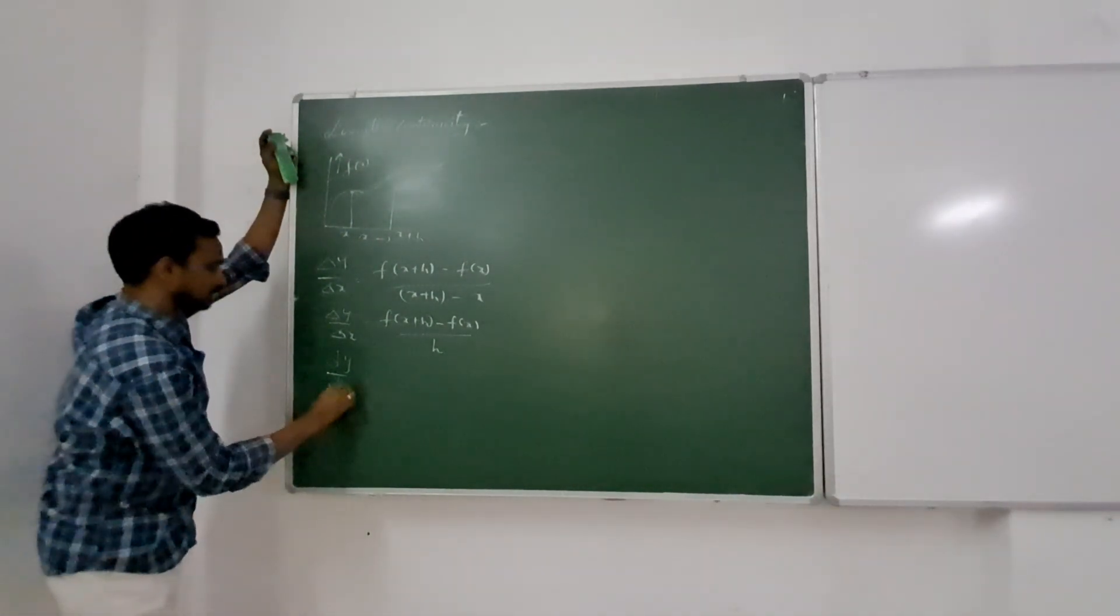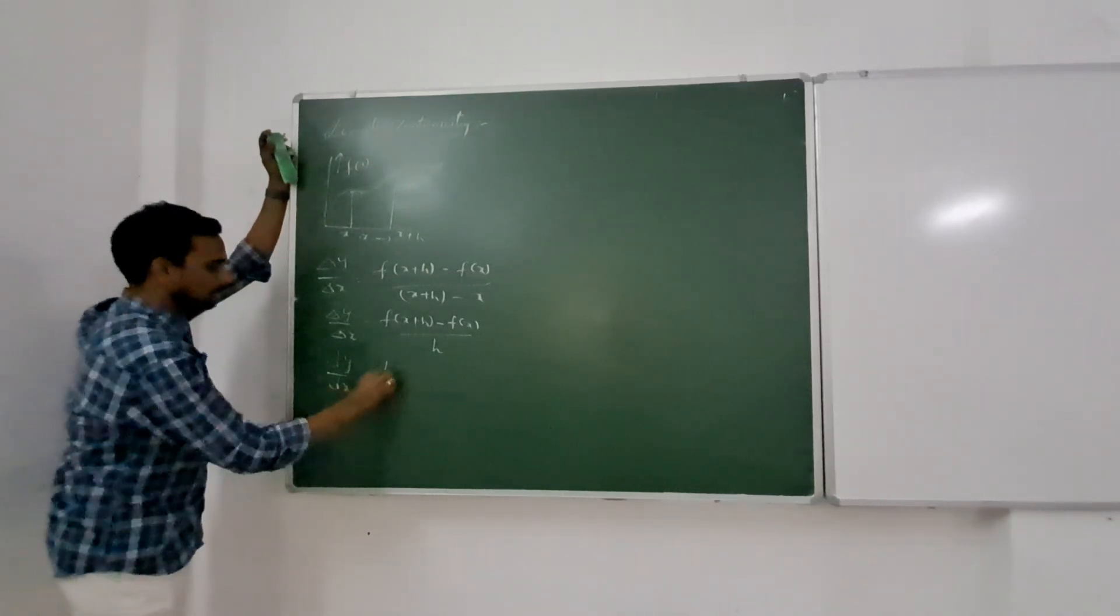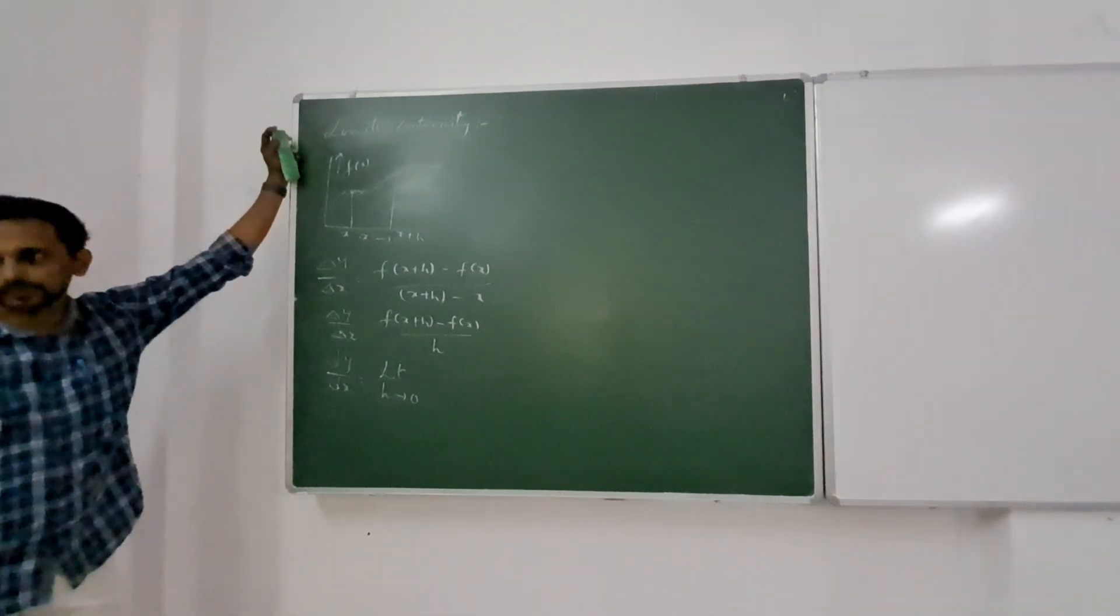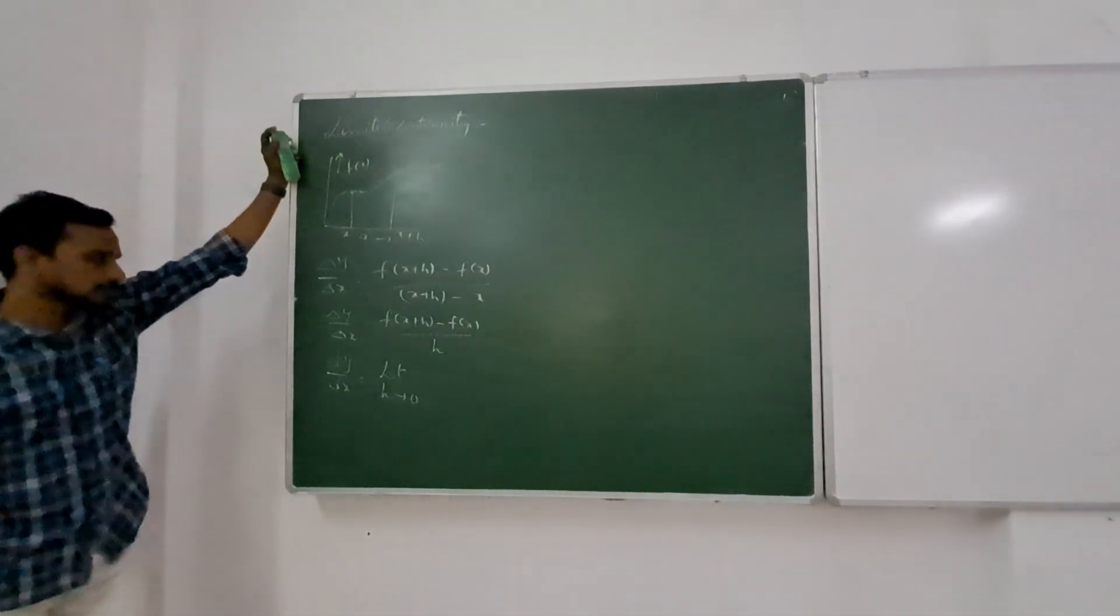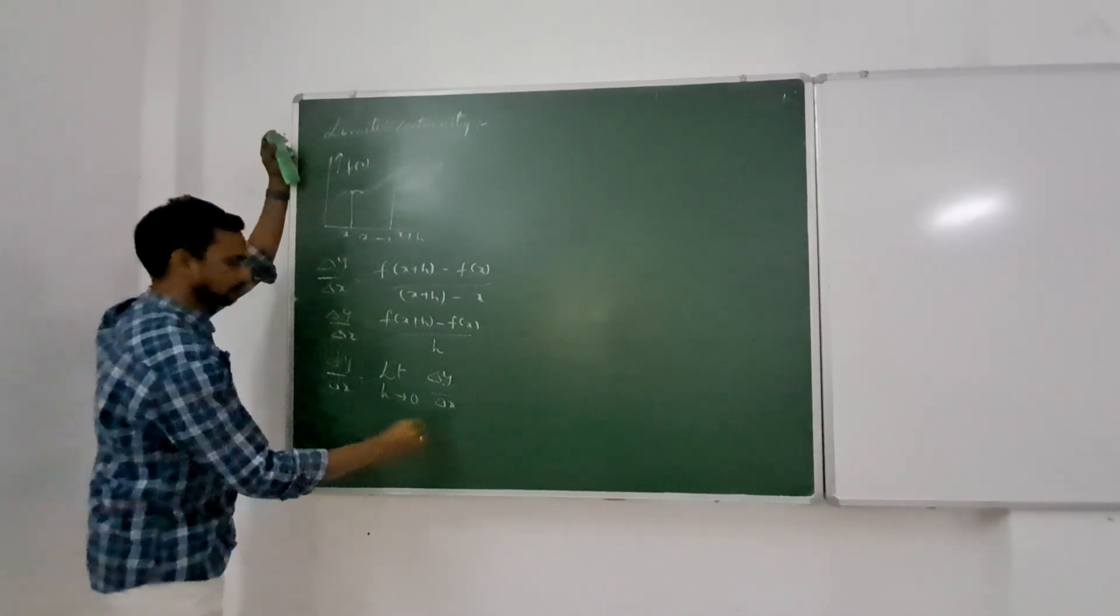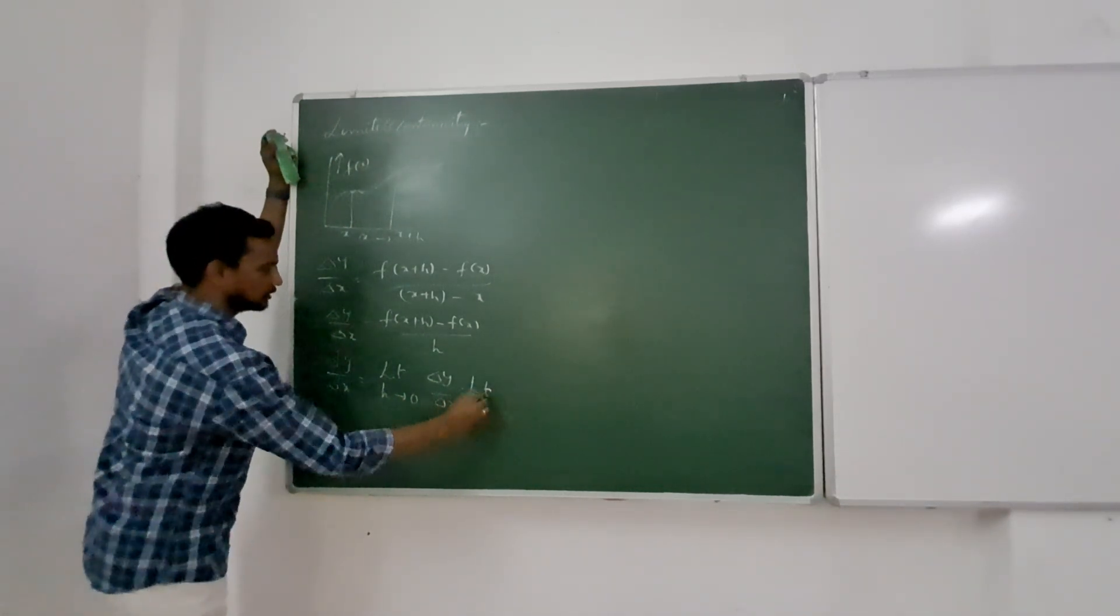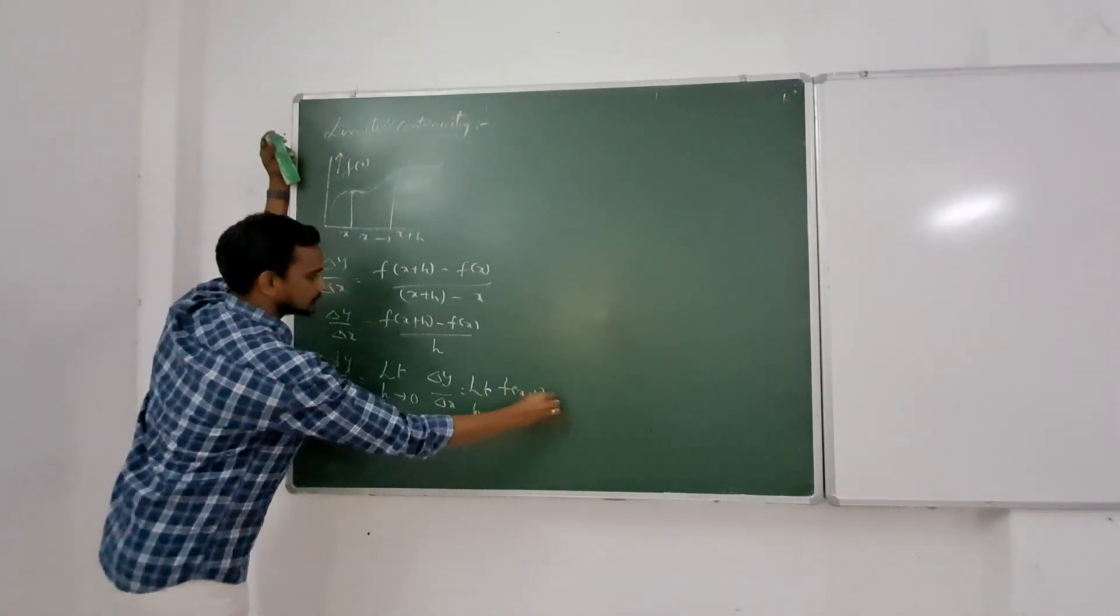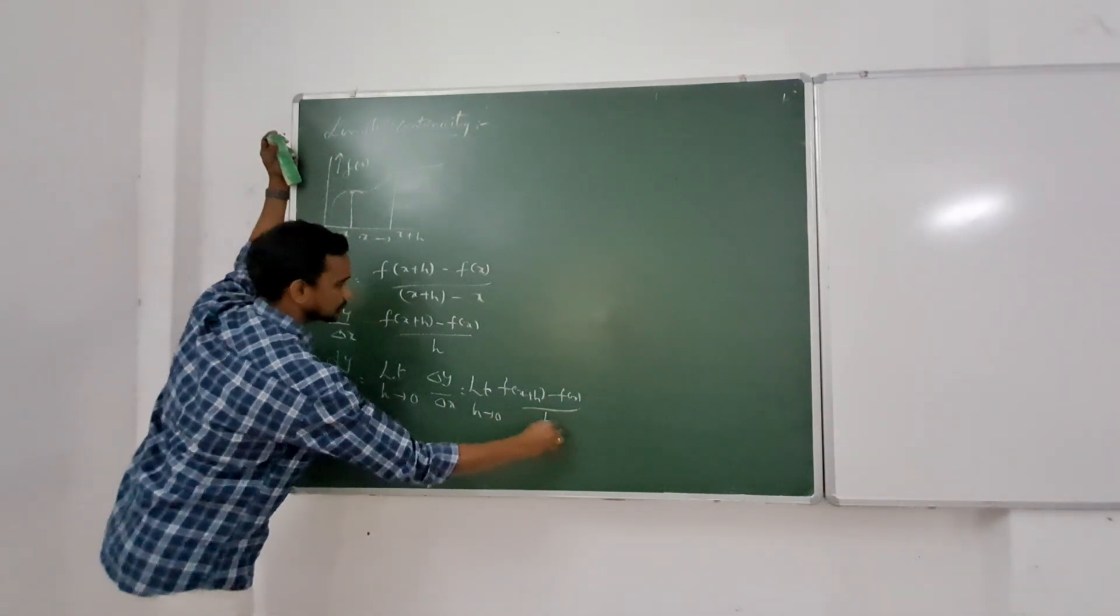dy/dx is the slope. It is given by the limit as h tends to zero. The limit h tends to zero, delta y by delta x. f of x plus h minus f of x by h.